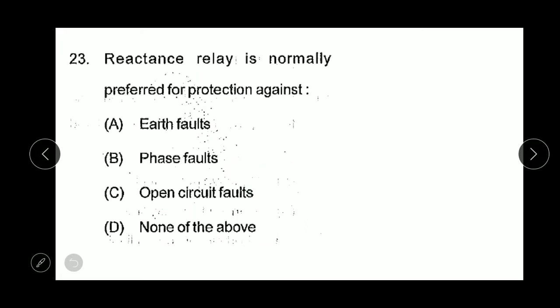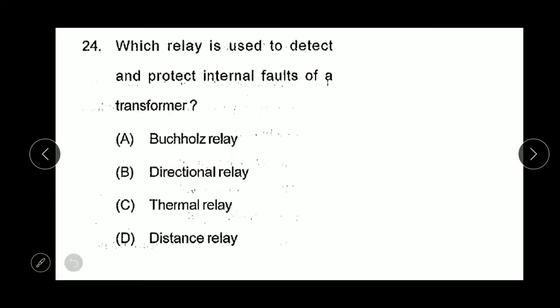Next question: reactance relay is normally preferred for protection against earth fault, because reactance relay is not affected by variable impedances. Earth fault is generally associated with variable impedances which generally do not affect the reactance relay. Which relay is used to detect and protect internal faults of a transformer? This is Buchholz relay.